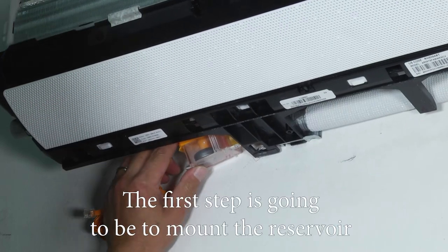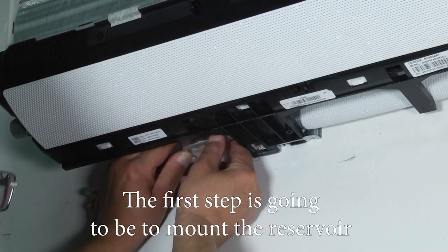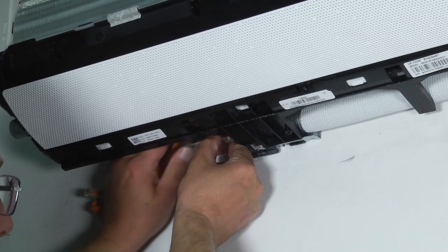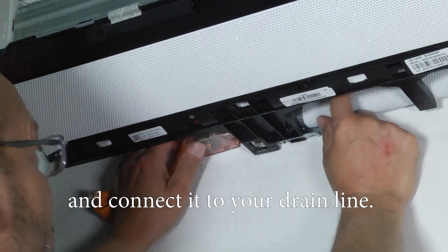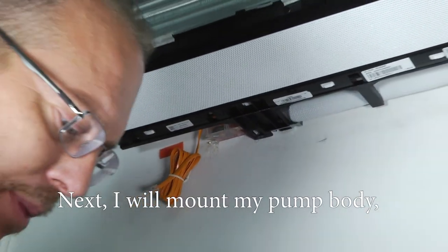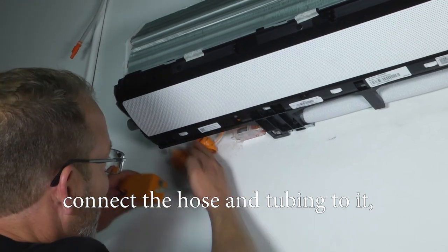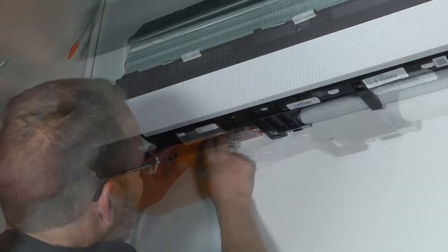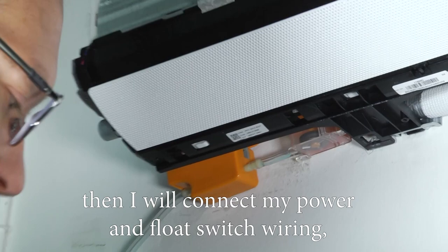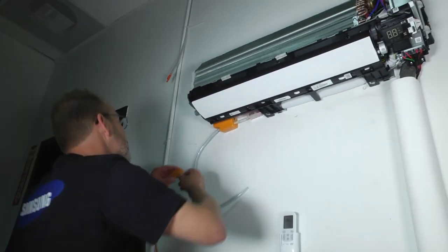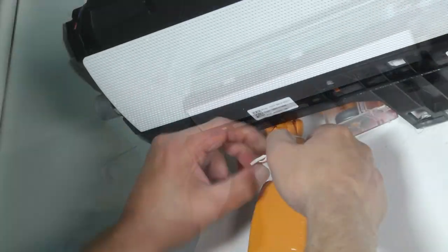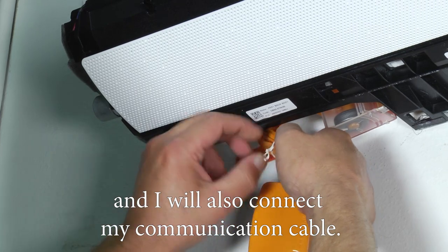The first step is going to be to mount the reservoir and connect it to your drain line. Next I'll mount my pump body, connect the hosing tubing to it, then I'll connect my power and float switch wiring, and I'll also connect my communication cable.